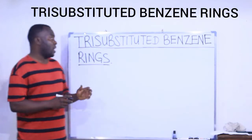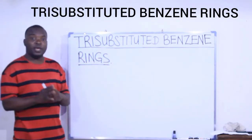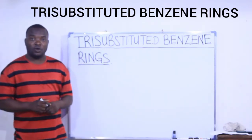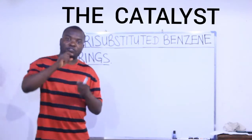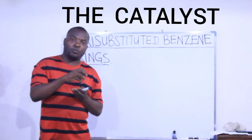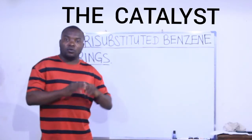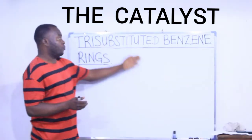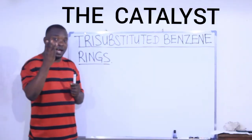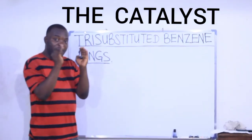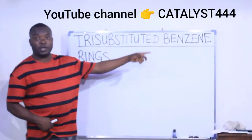Today we are going to take a look at trisubstituted benzene rings — how to name trisubstituted benzene compounds. When we substitute three hydrogen atoms on a benzene ring with other groups or atoms, the product formed is known as a trisubstituted benzene ring. Tri means three.